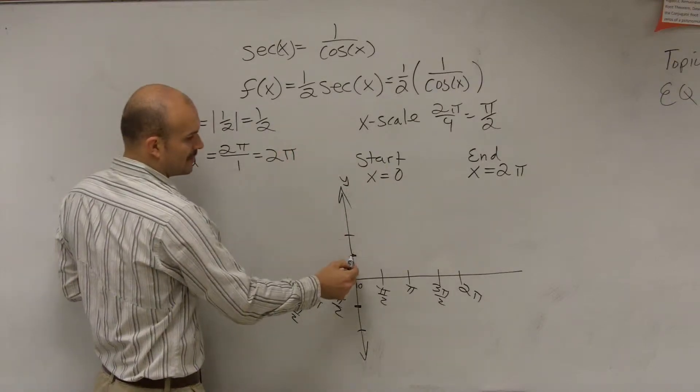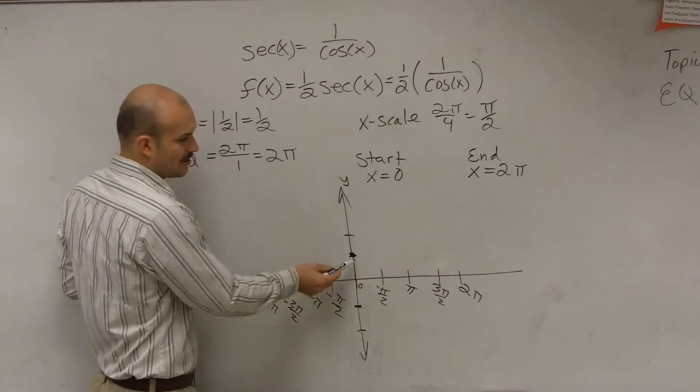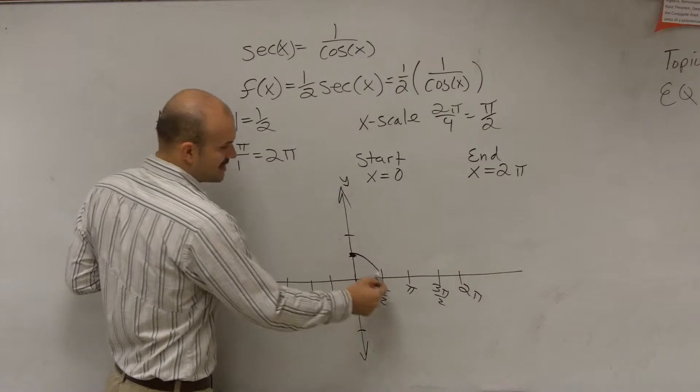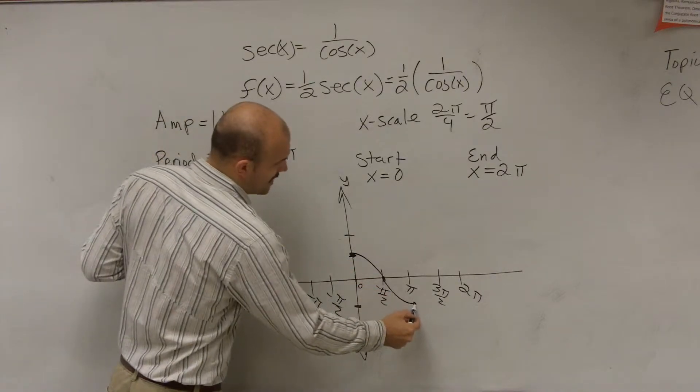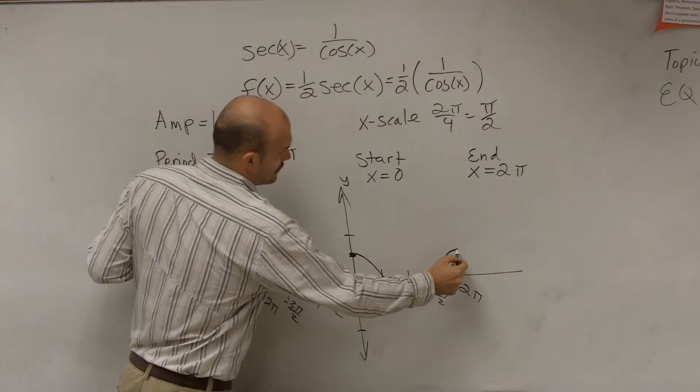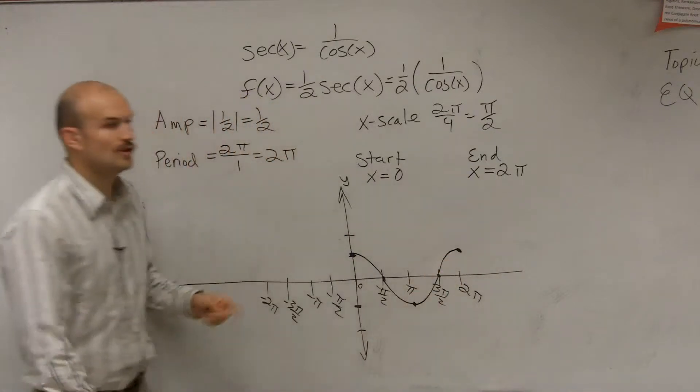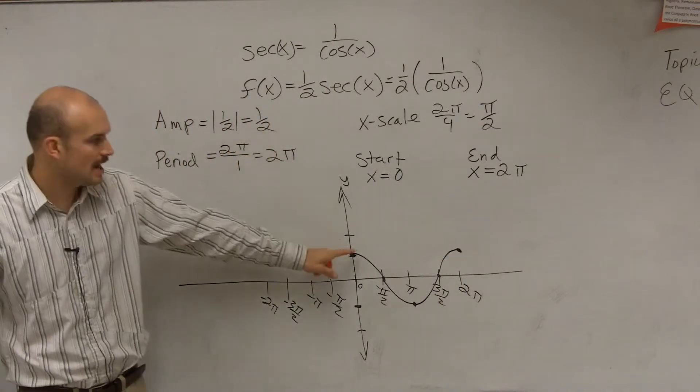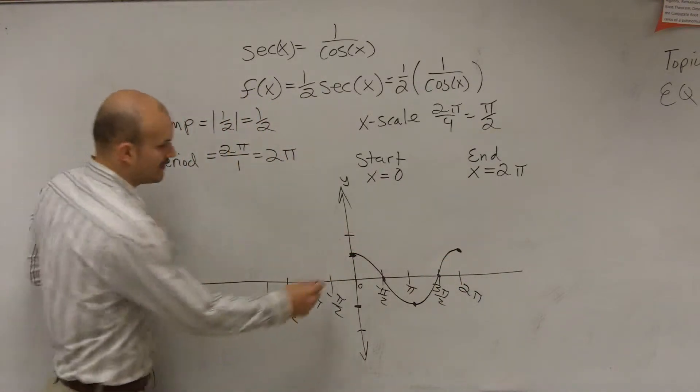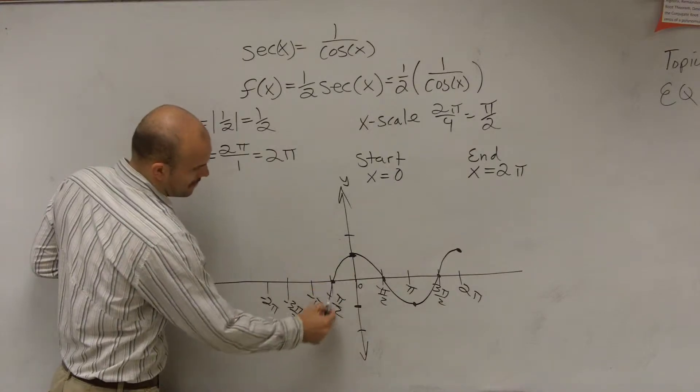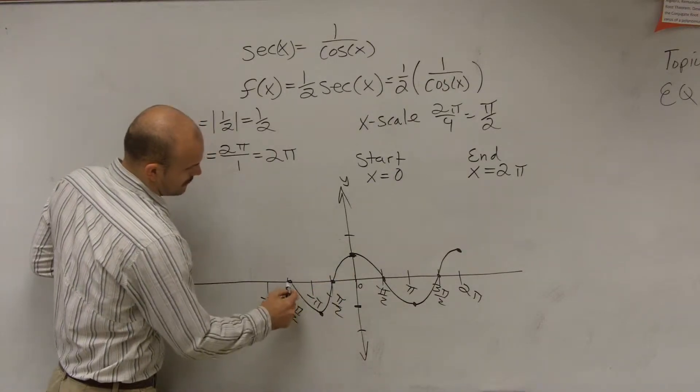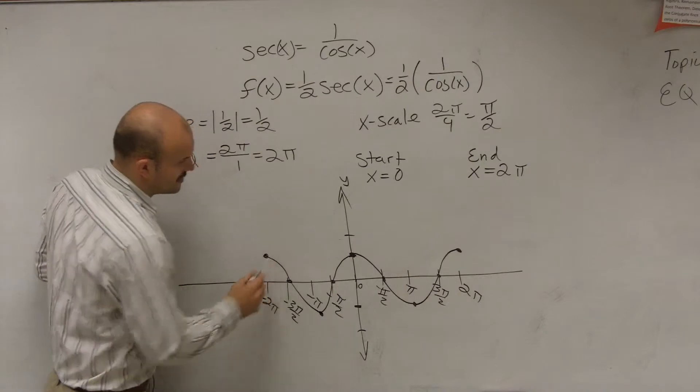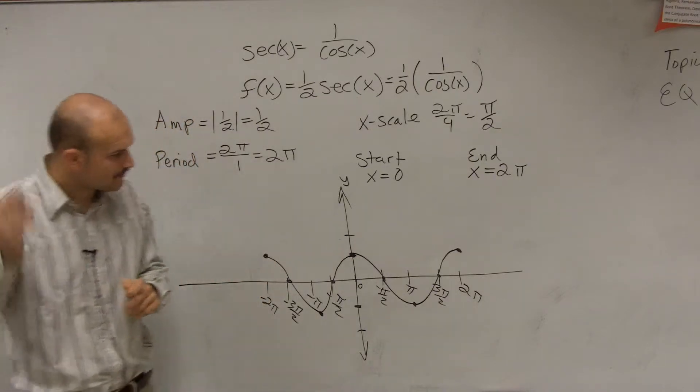Our cosine function, remember, started at 0. Then it went to its next critical point down, up, and over there. So the cosine function with an amplitude of 1 half is going to look like this. If we just continue the graph, it can continue that way.